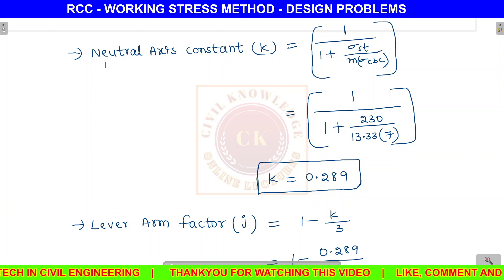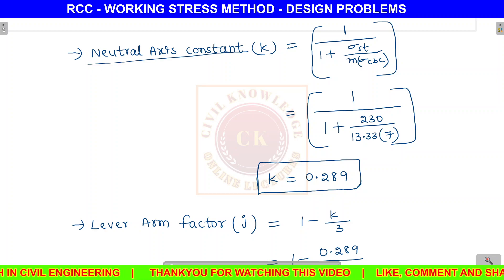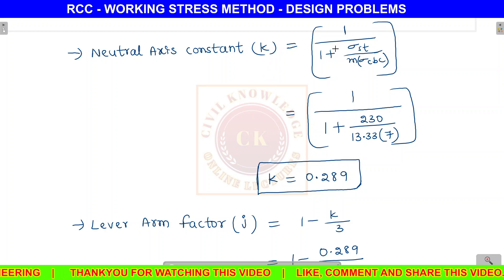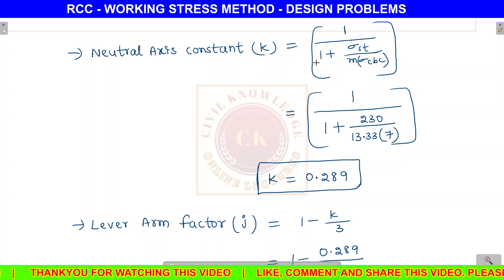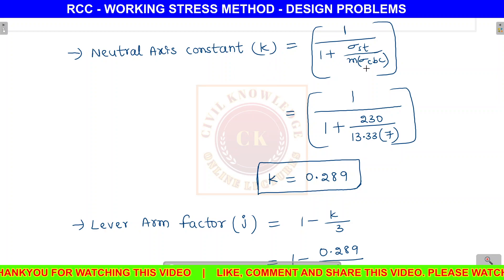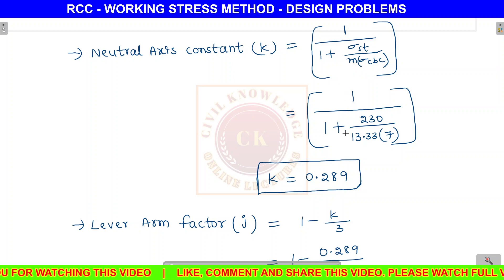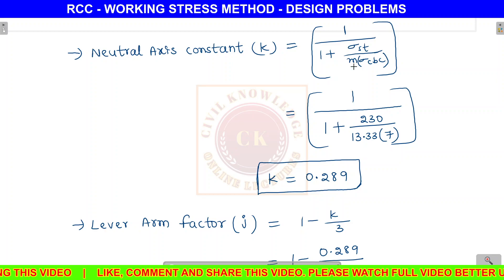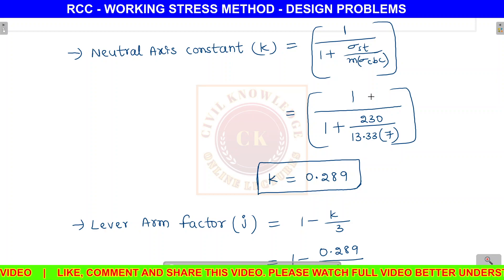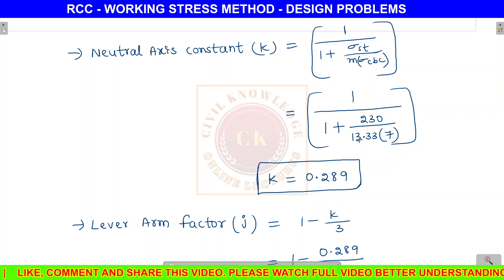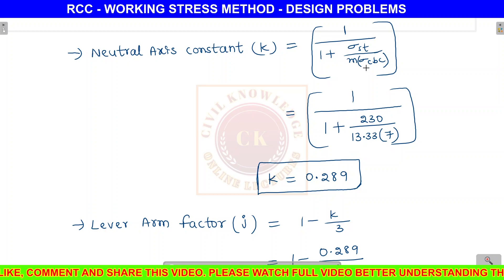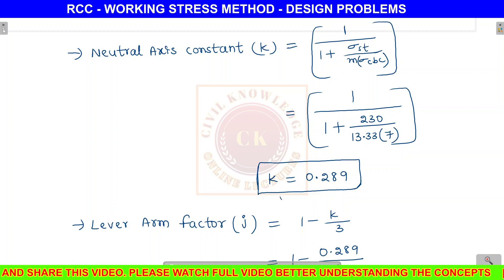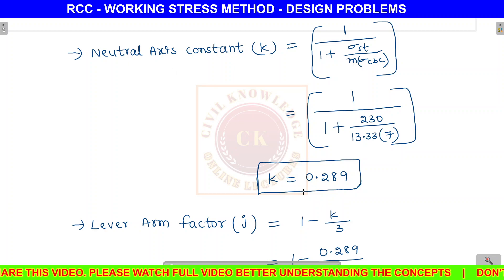Next design constant: find the neutral axis constant K. The formula is K = 1 / (1 + sigma ST / (M × sigma CBC)). Substituting: sigma ST = 230 N/mm² for Fe415 steel, M = 13.33, sigma CBC = 7 N/mm². So K = 0.289.